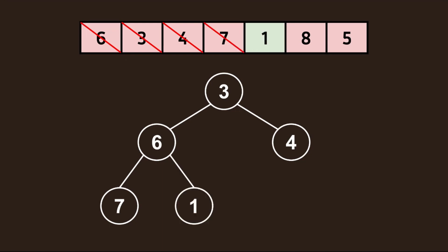Now we'll add the next value in our array. Comparing this to its parent, we see that the value of 1 is less than 6, so a swap operation needs to be performed. But the second condition still isn't met, since we need to compare this value to its parent. Seeing that 1 is less than 3, another swap operation needs to be performed.